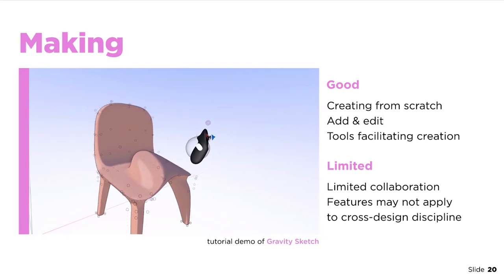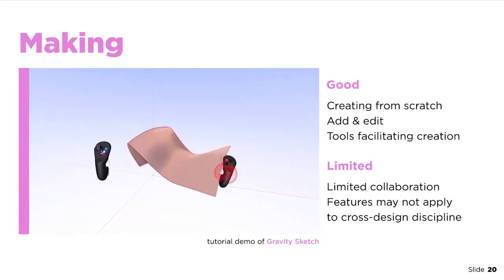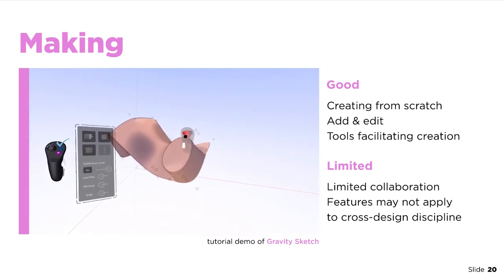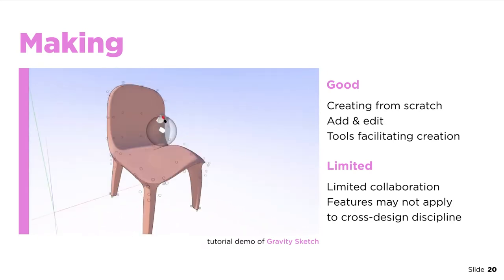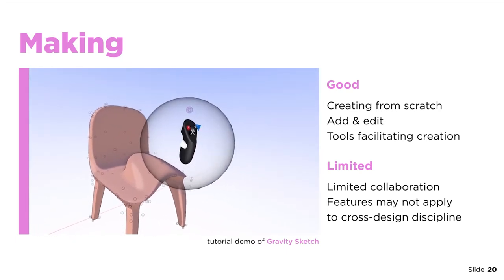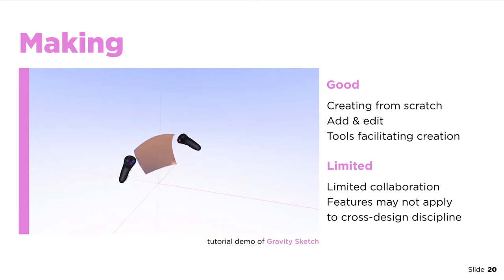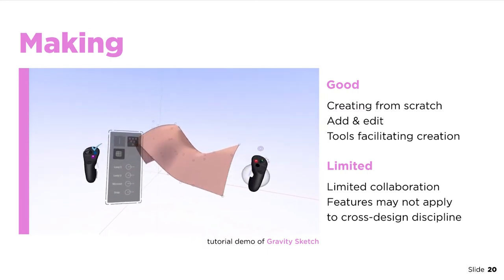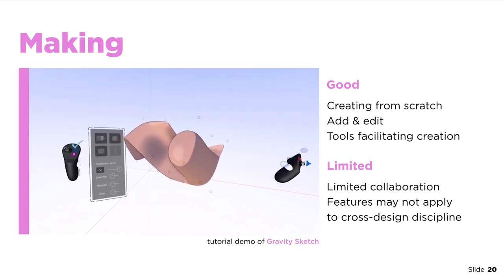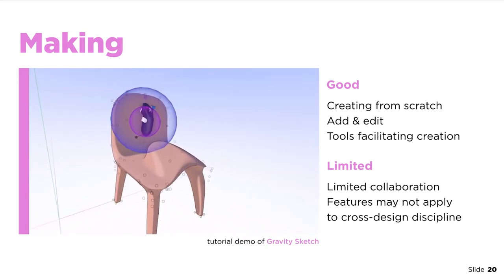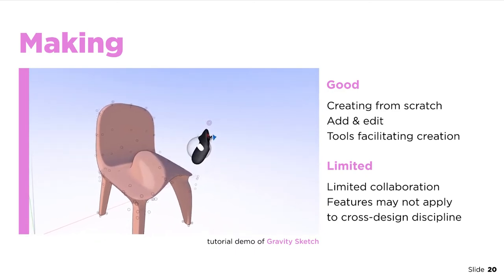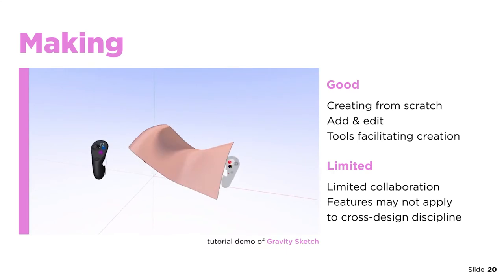As with the visualizing category, applications here lack in synchronous features for real-time collaboration and critique, which are important for studio work. It should be noted that updates in some apps have started incorporating networking features, indicating a growing demand in collaborative and educational work. One other issue is the focus on tools that may benefit only a particular branch of design, which may not be ideal in studios where there is collaboration across other design disciplines.